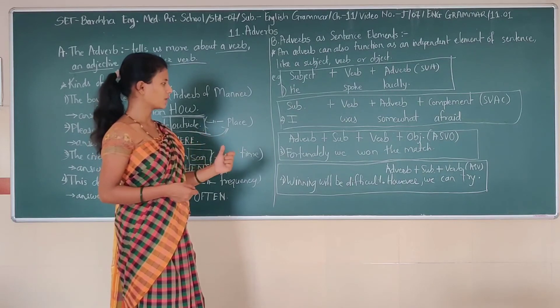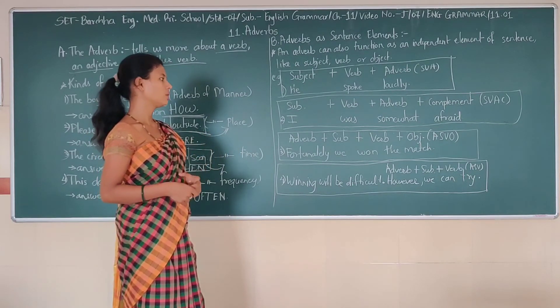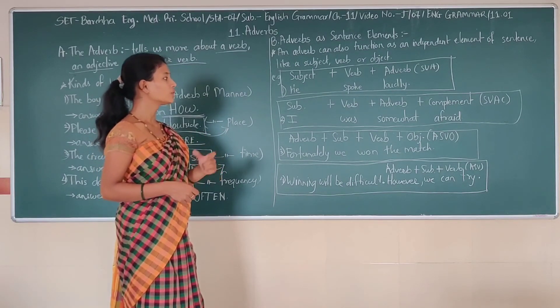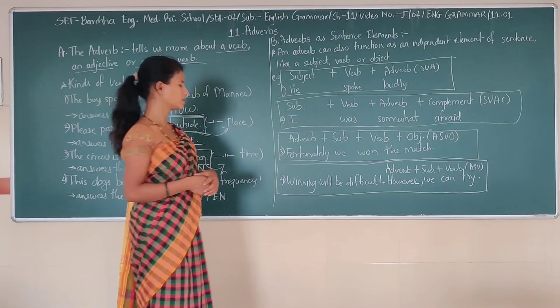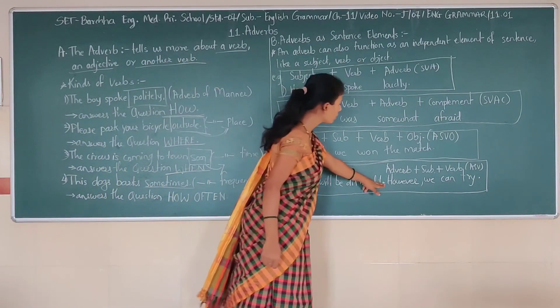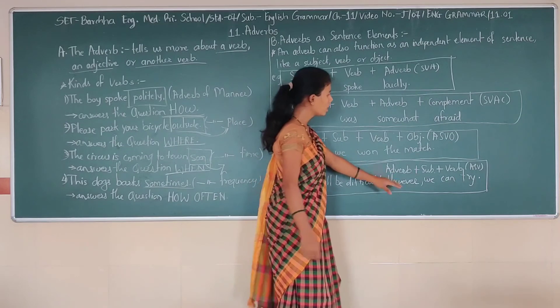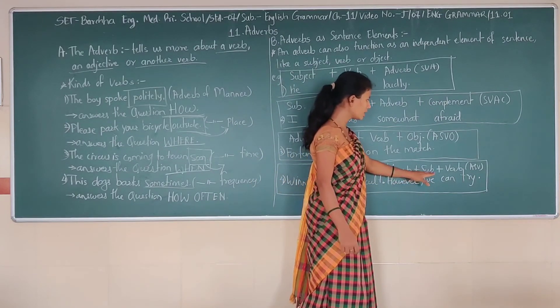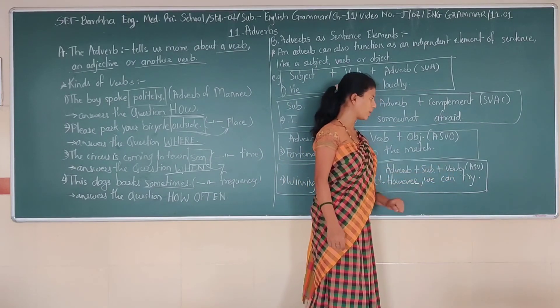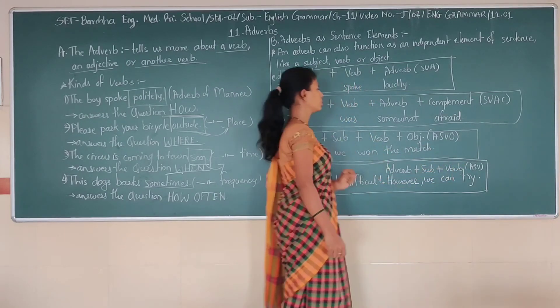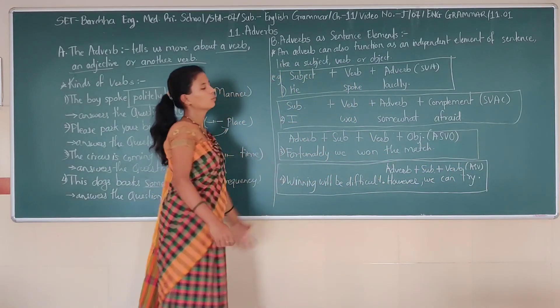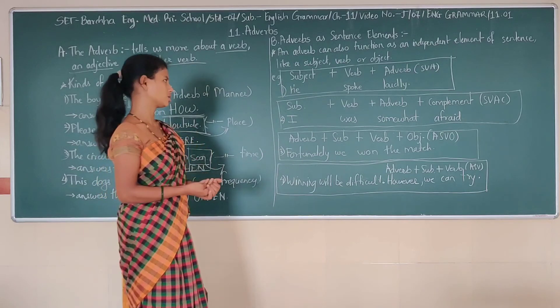And last one. Winning will be difficult, however we can try. So in this sentence, however is the adverb. We is the subject and we can try is verb. And you can say this is the format or formula of the sentence.